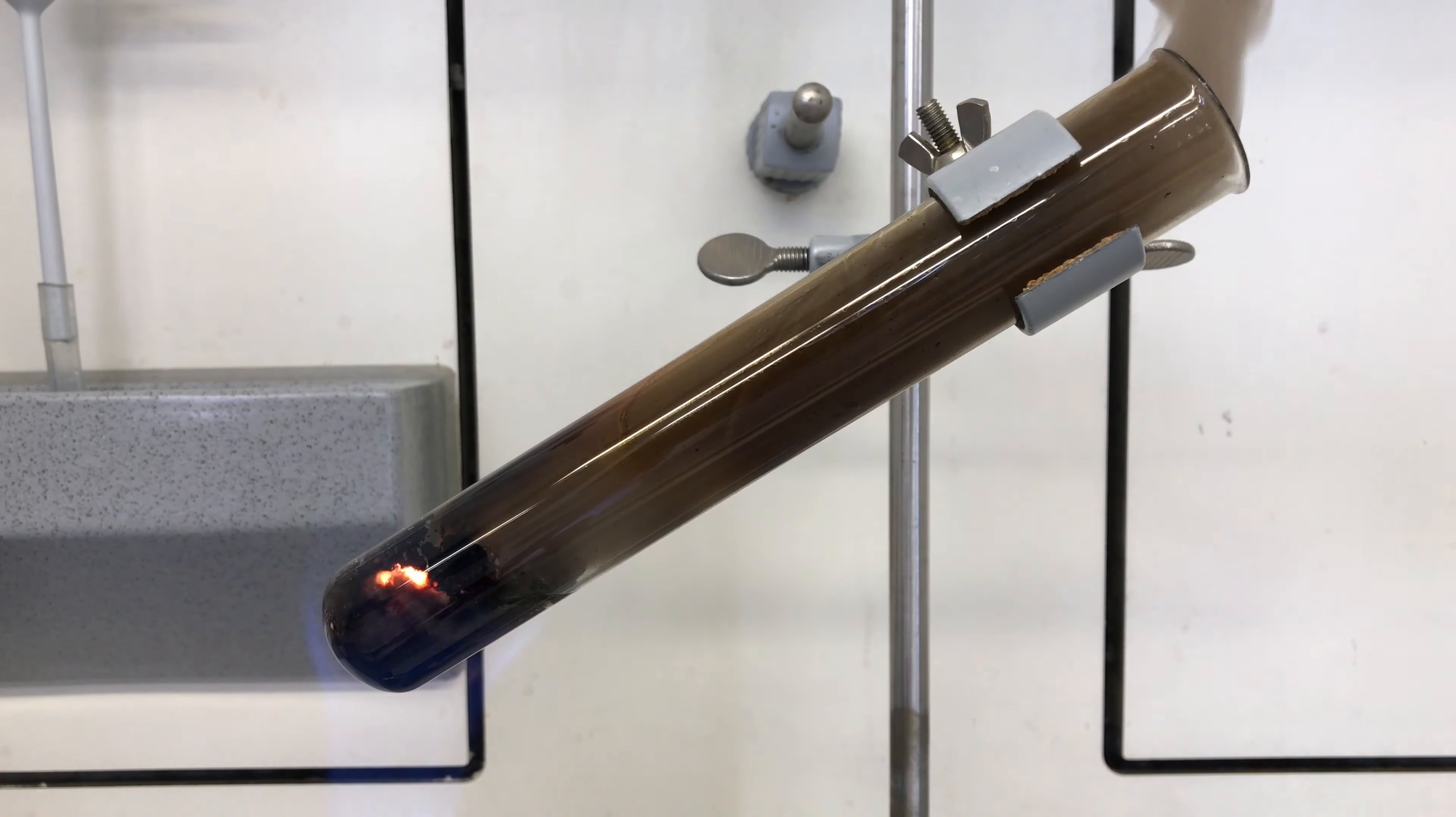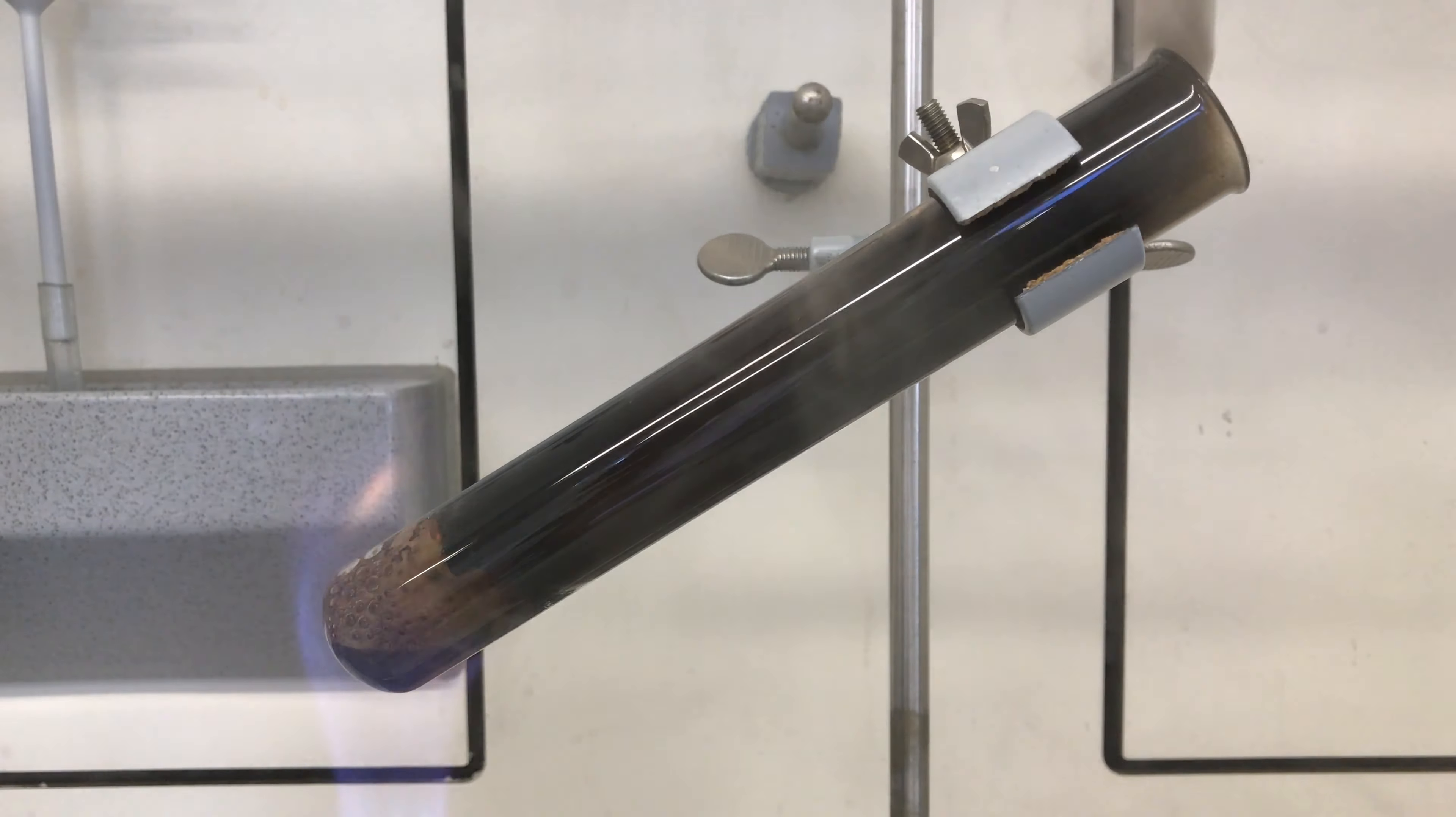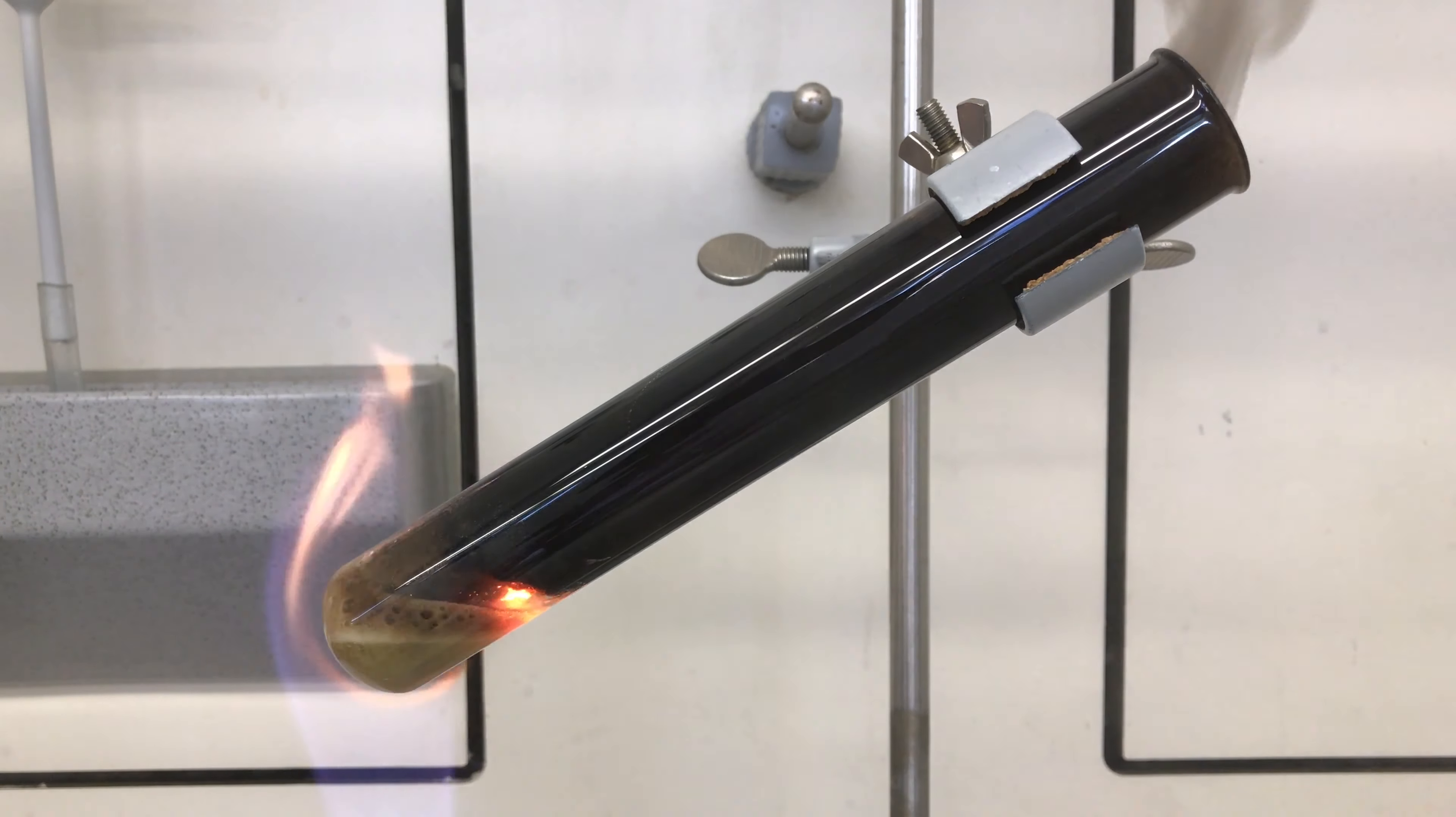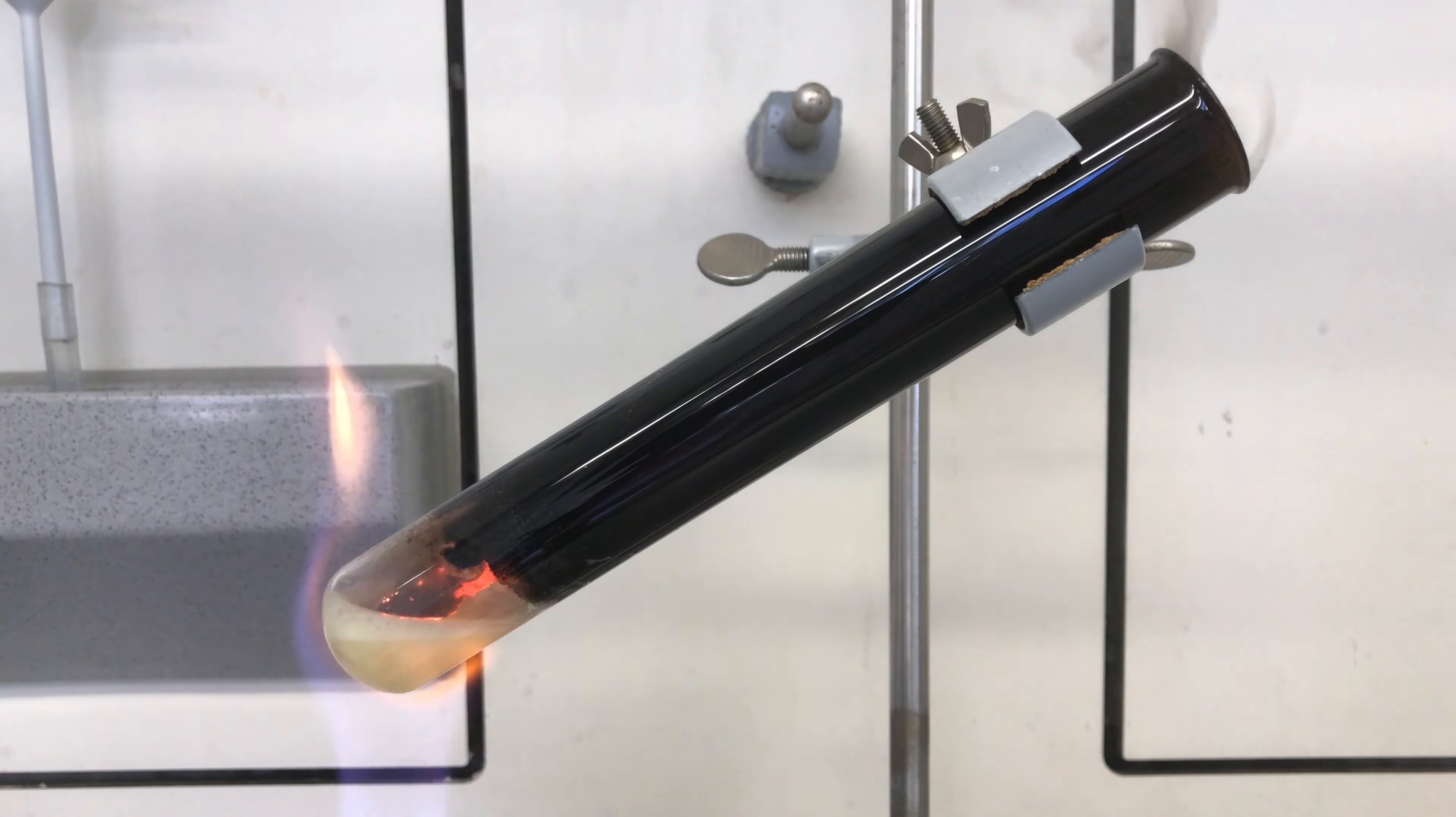It took a long time but after heating it up it finally started to burn in the test tube. As it got hotter you can see that the carbon in the molten potassium nitrate was quickly oxidized and it turned clear.